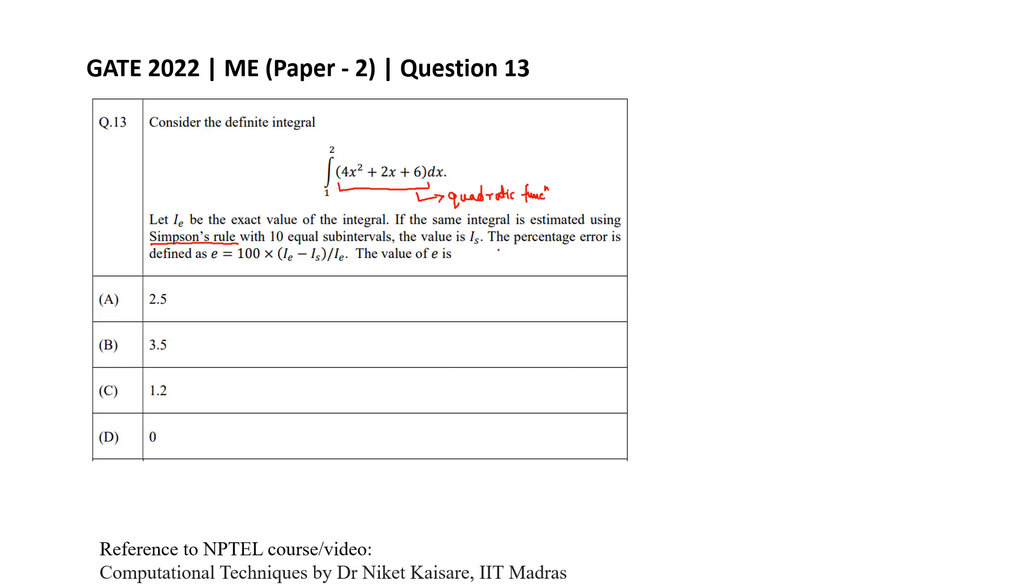The percentage error will be equal to 0. So for this case, I_s will be equal to I_e since f(x) is a quadratic function. This means that the percentage error will be equal to 0, and the correct option to this problem will be D, equal to 0.